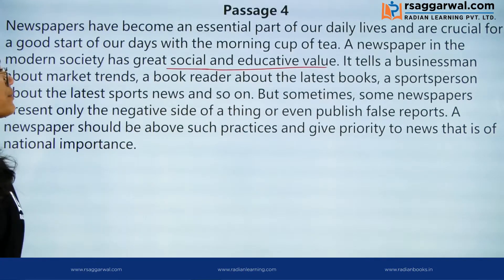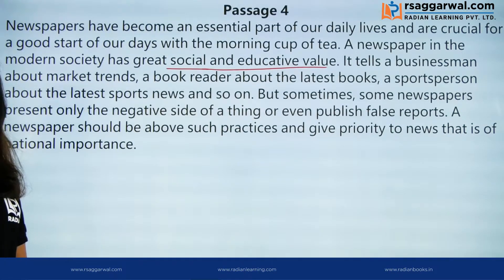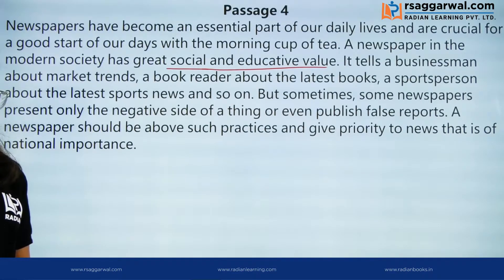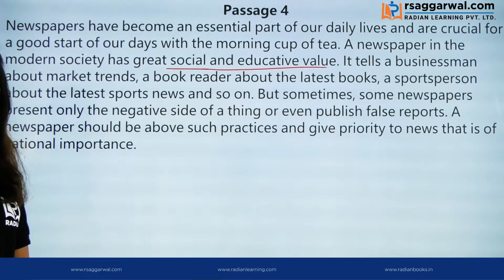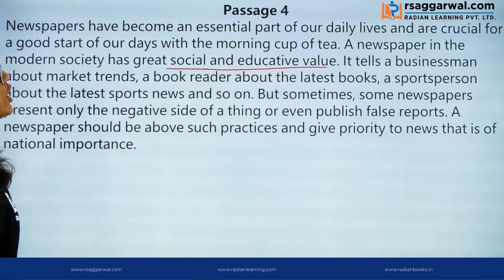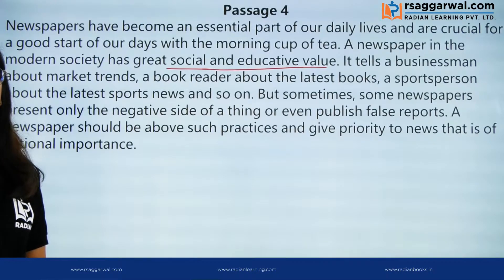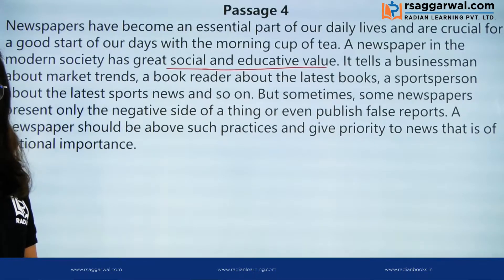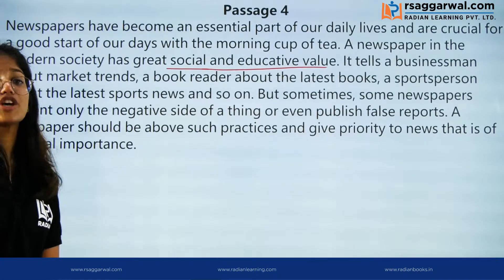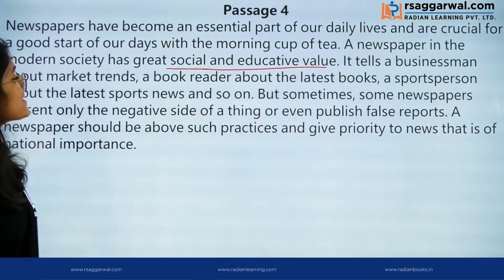Before moving forward, let me tell you something about newspapers. Newspapers do type ke available hain — one is national newspapers, jaise ki Hindustan Times, Times of India; aur regional newspapers, jo regional languages mein available hain, jaise ki Amar Ujala, Dainik Bhaskar, Dainik Jagran, etc.